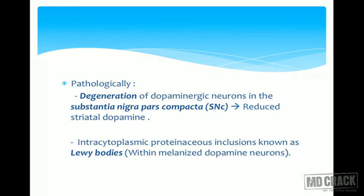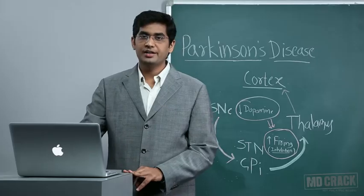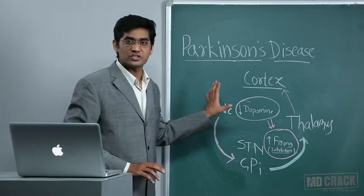The pathophysiology of Parkinson's disease involves degeneration of dopaminergic neurons in the substantia nigra pars compacta, which leads to reduced striatal dopamine. This is important for MCQs: Parkinson's is a degeneration of the substantia nigra, leading to decreased production of dopamine. The second pathological point is the presence of intracytoplasmic proteinaceous inclusions known as Lewy bodies.